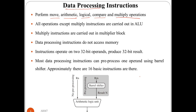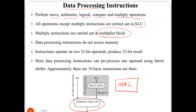All operations except the multiply instruction are carried out inside the ALU. This is related to the architecture of the ARM7 processor. The multiplication instruction is carried out in a separate MAC block available inside the ARM7 architecture. Data processing instructions do not access memory — these instructions operate on two 32-bit operands.